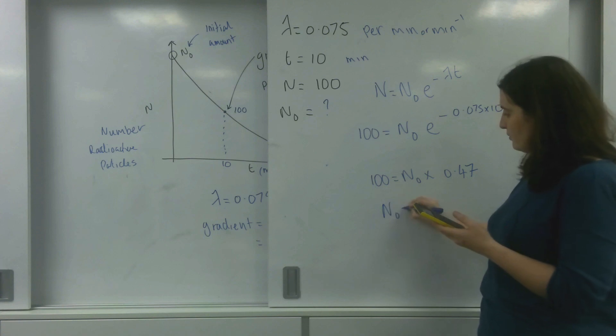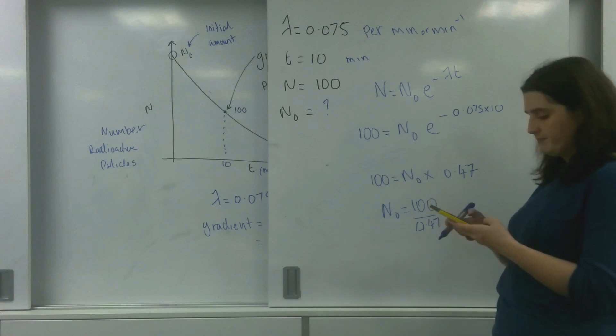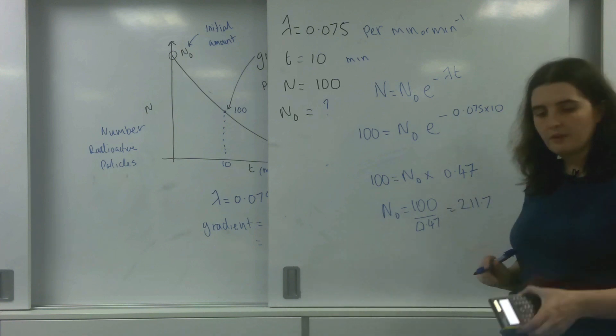I've got 100 equals n naught times by 0.47. And n naught would be 100 divided by 0.47, which is 211.7.